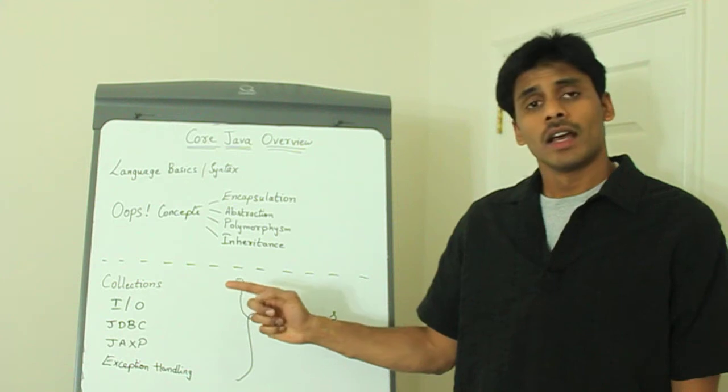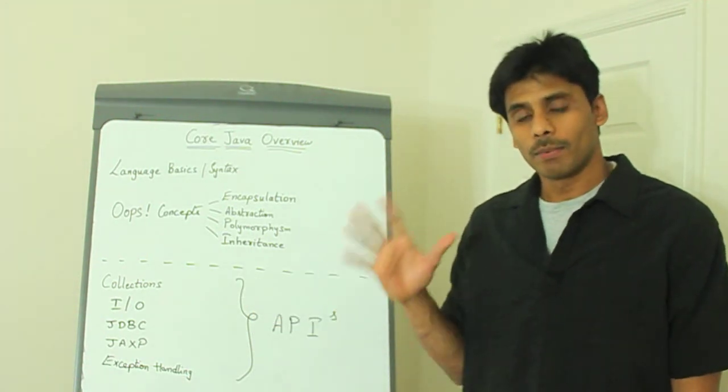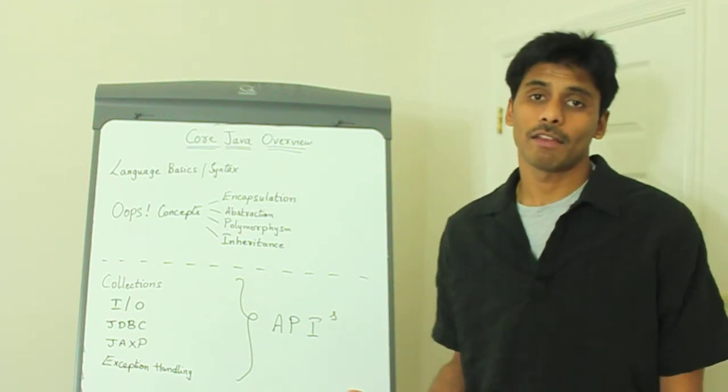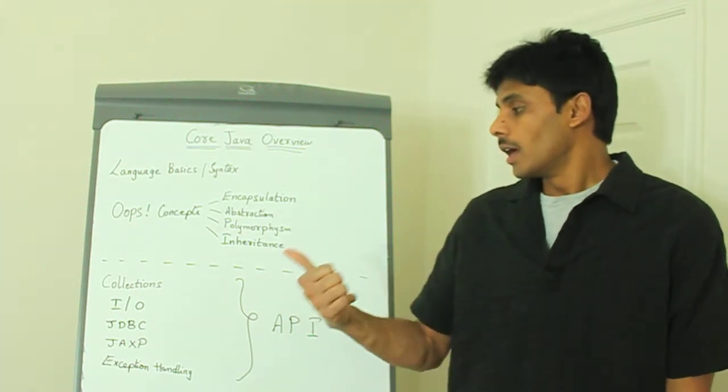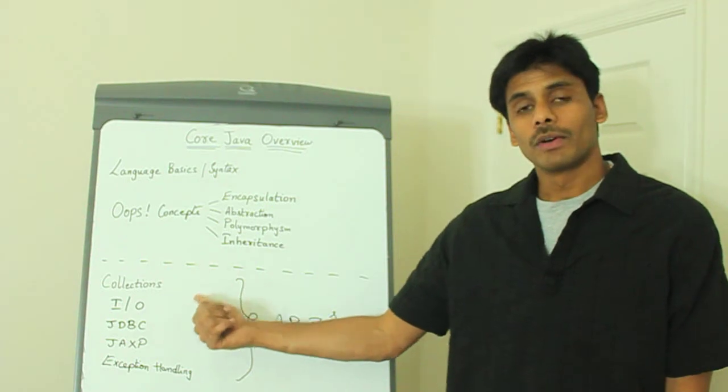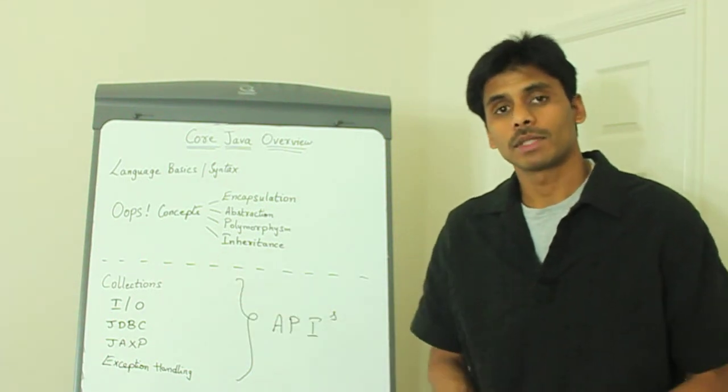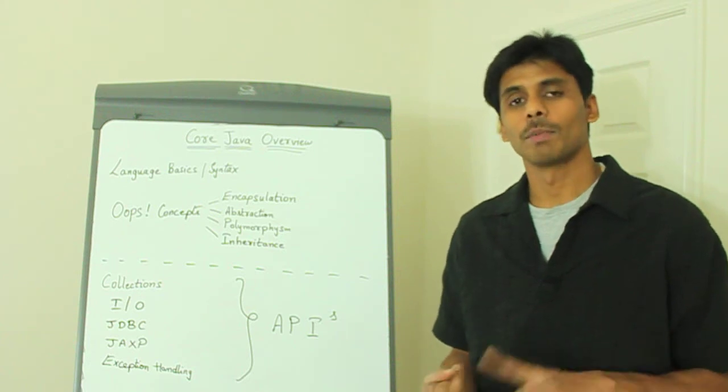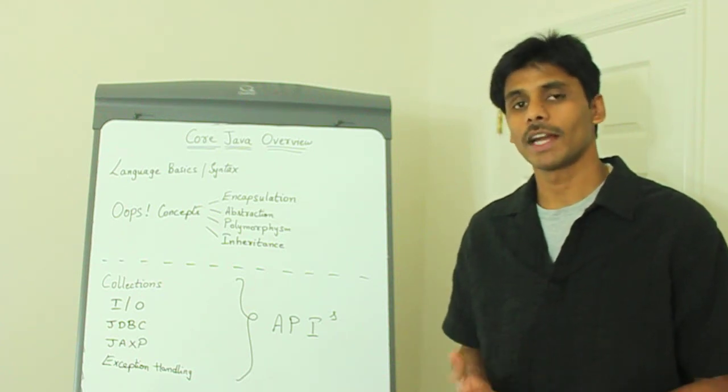Once you have the job postings displayed and a candidate wants to upload his resume or apply for one of these job postings, you will be using the IO API, which stands for Input Output Streams. It allows you to read and write data to a stream, which could be a file system or a network.